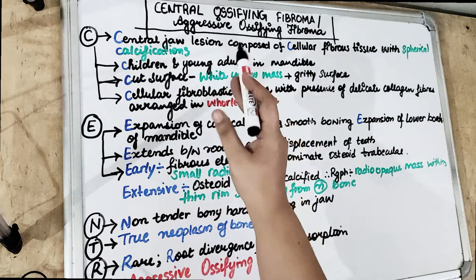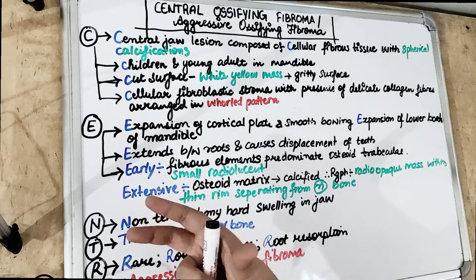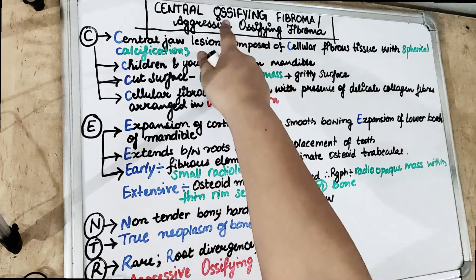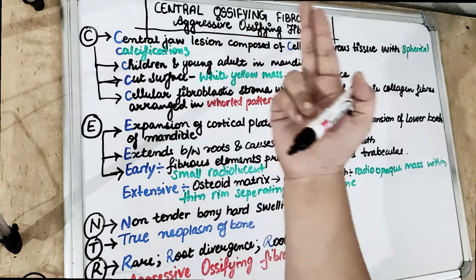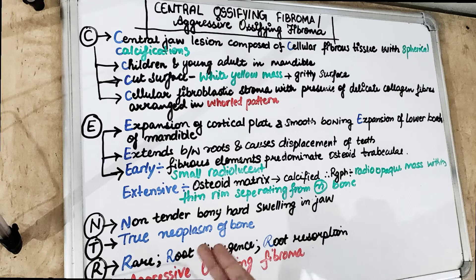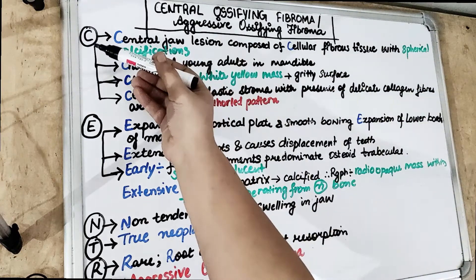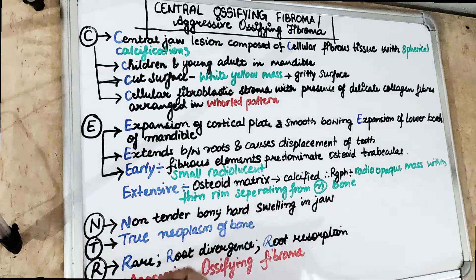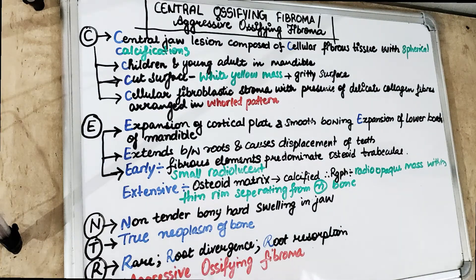As the name suggests, this is another kind of fibroma in which there is an overgrowth. The fibrous growth is now calcified and it is more like a bone type, also known as the aggressive ossifying fibroma. We are going to cover this topic using the mnemonic C-E-N-T-R-A in order to make it easier for you to remember the main points.